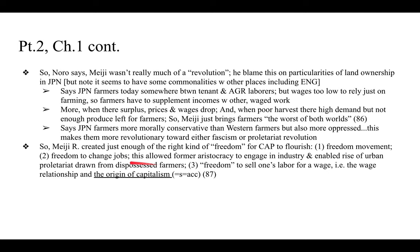The Meiji Restoration created just enough of the right kind of freedom for capitalism to flourish, since ideas of capitalism and liberalism are based on specific notions of freedom. These included: one, freedom of movement; two, freedom to change jobs — important not just for peasants but for the former aristocracy who could now engage in industry, enabling the rise of an urban proletariat drawn from dispossessed farmers; and three, perhaps most important — the freedom to sell one's labor for a wage, i.e., the wage relationship, frequently identified as the origin of capitalism.